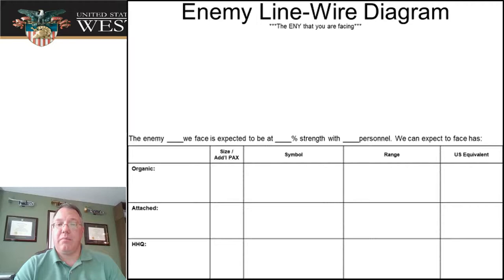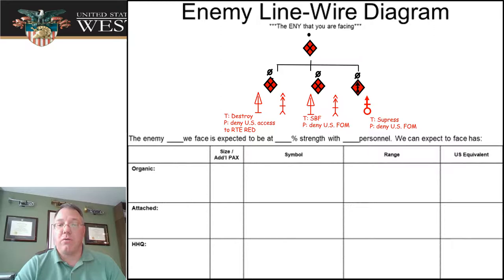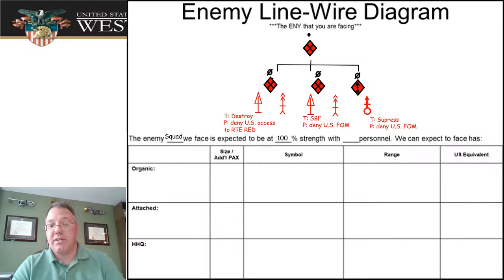The next slide is labeled the enemy line wire diagram. It's a way to talk about our specific enemy and get at their composition and strength of who we're facing. We start with a line wire diagram task org along with their key weapon systems, tasks, and purposes — just like we do it on the friendly side. So here we've got our enemy squad, its fire teams, their tasks and purposes. It's a fill-in-the-blank format: the enemy squad we're facing is expected to be at 100% strength with 12 personnel.